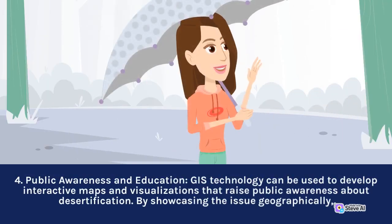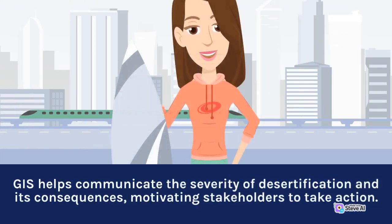4. Public Awareness and Education: GIS technology can be used to develop interactive maps and visualizations that raise public awareness about desertification. By showcasing the issue geographically, GIS helps communicate the severity of desertification and its consequences, motivating stakeholders to take action.